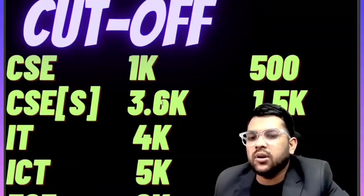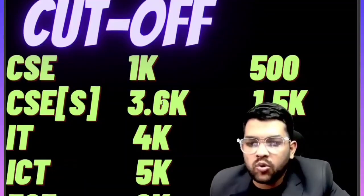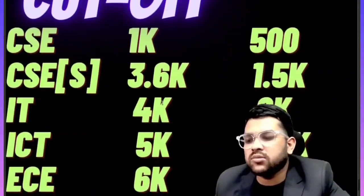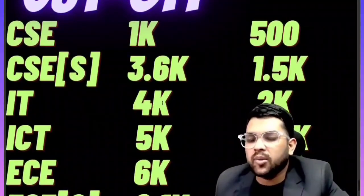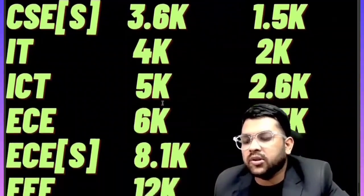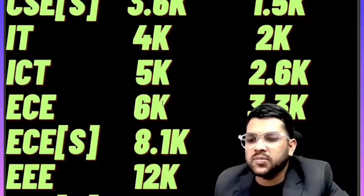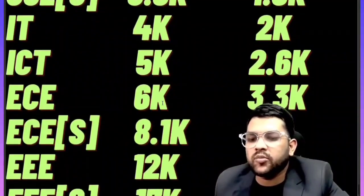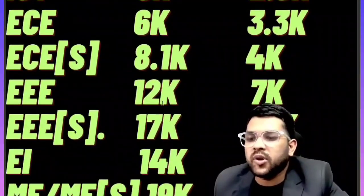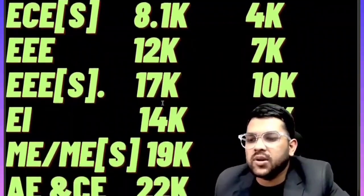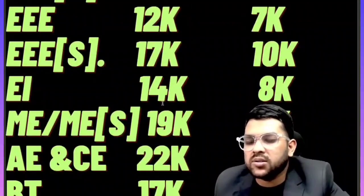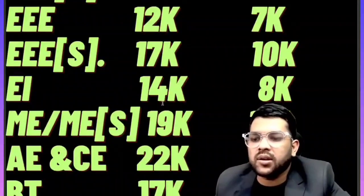For stream two: one point five thousand for ICT four, and two thousand ICT five; two point six thousand EC six, and three point three thousand EC specialization eight point one; four thousand EEE twelve, and seven thousand EEE specialization seventeen.